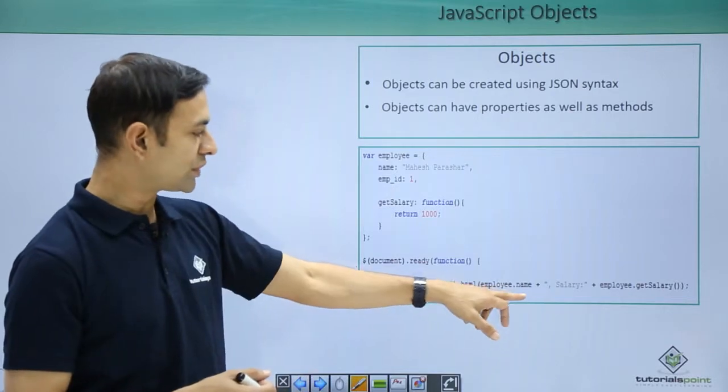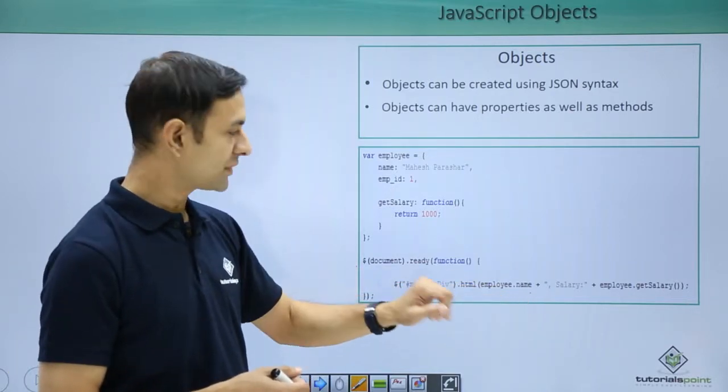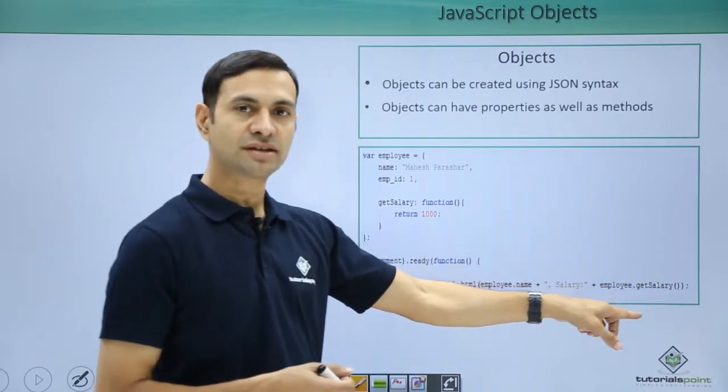Look at the syntax, employee.name, no brackets, that means it's a property. Then get salary, it has brackets, that means it's a method.